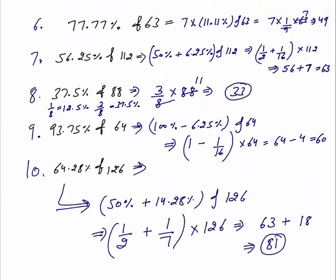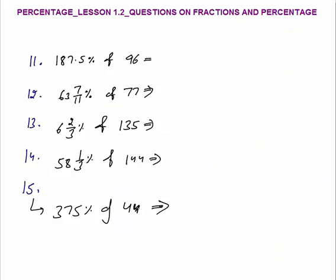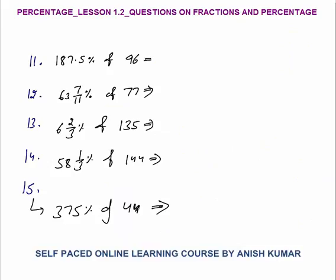The most important thing is how fast and with minimum writing or without writing you can solve these questions. Again, challenge yourself and try to solve each question in the least possible time. Questions 11 to 15. 187.5% of 96 — can I say this equals 200% minus 12.5% of 96?